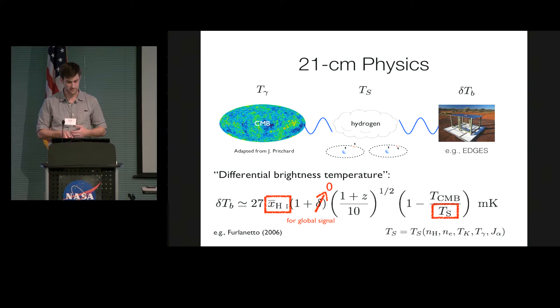And so this depends on things you might expect, like the density and the temperature, because through collisions, we can exchange, you know, kind of a spin-up situation for an anti-alignment configuration. But it also depends on the presence of any background radiation fields, which I'll come back to in just a second.